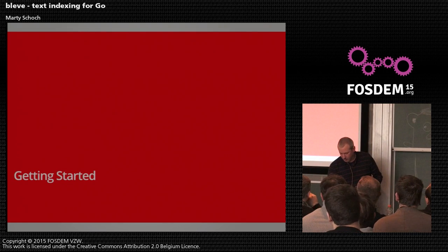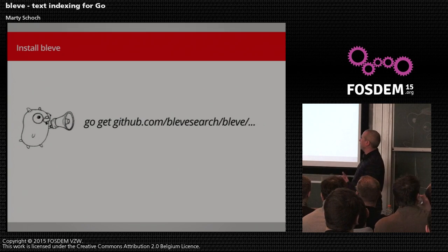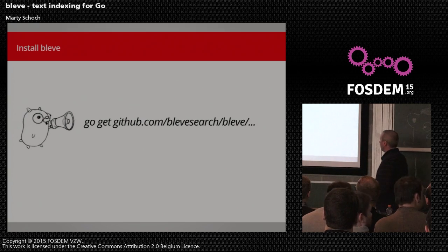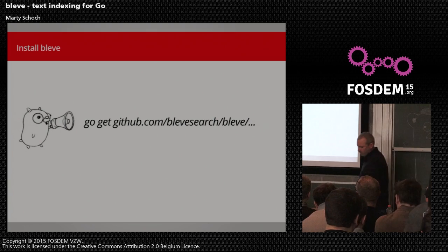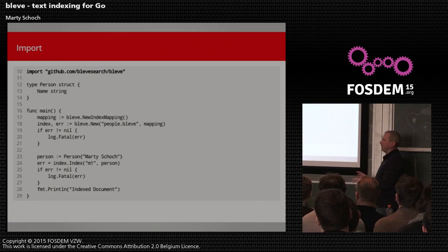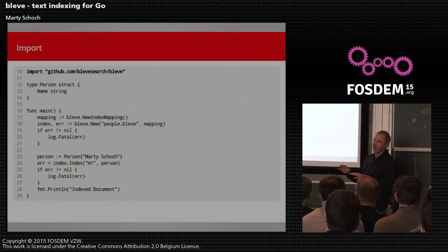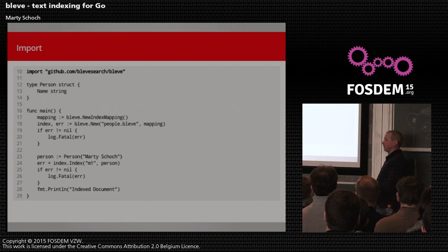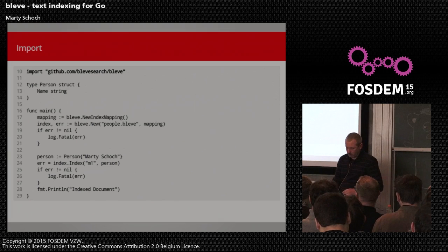Let's look at some code to get started. One of the earliest decisions we made was to make the Bleve library Go-gettable. So to get started you can just do a go get to our GitHub repo. If you add the dot-dot-dot, you'll also get some command line utilities we built. We wanted it so that the simplest use case only requires importing a single package — the same GitHub repo.